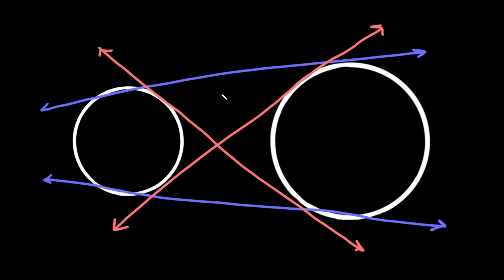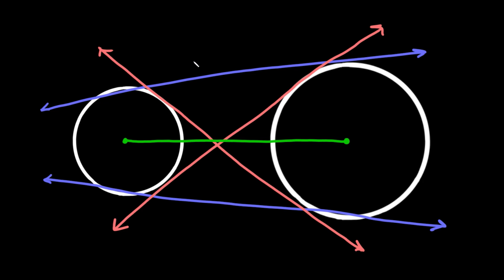To identify the internal and external tangents, draw in the centers of each circle and then draw a straight line connecting those two centers. Any tangent that crosses this line is known as an internal tangent — in this case those are the red tangents. Any tangent that doesn't cross or touch this line is known as an external tangent; those run on the outsides of the circles.